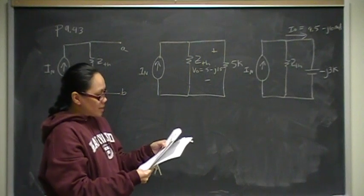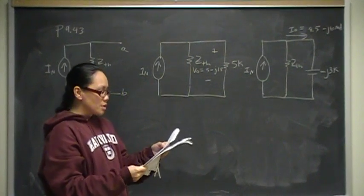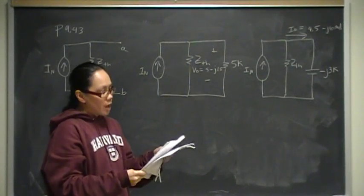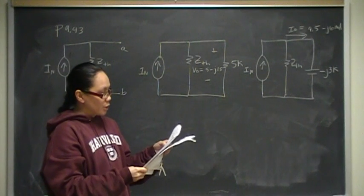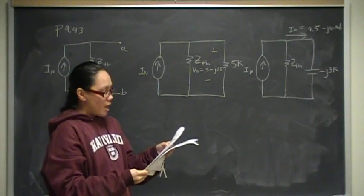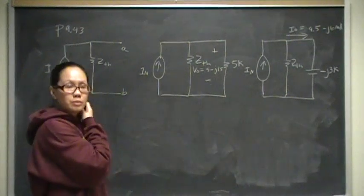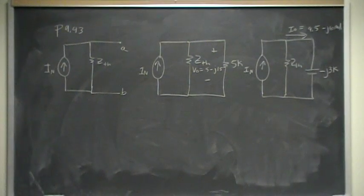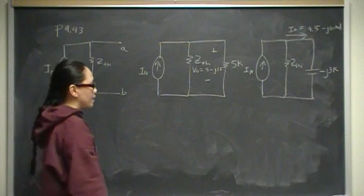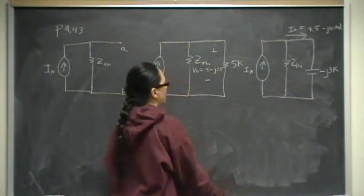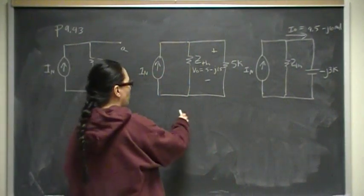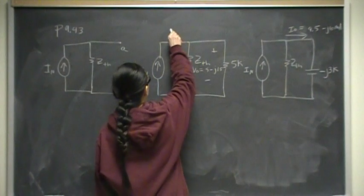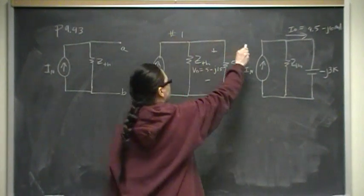So what we are trying to do is, given those two situations, we have a Norton equivalent, we are asked to find the Norton equivalent, the Norton current, and the Z-Thevenin. We are going to do that by setting up two KCL equations in scenario one, case number one, and case number two.